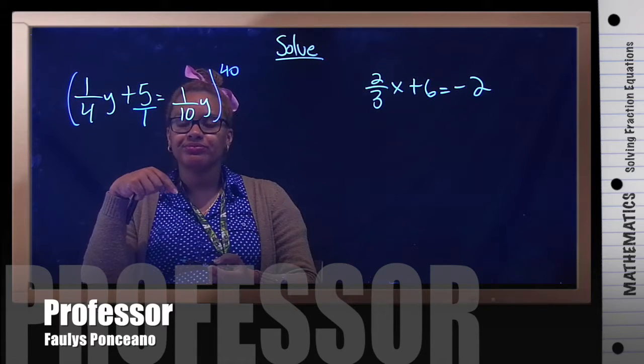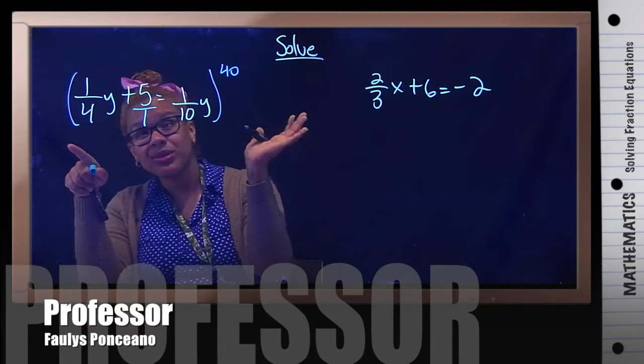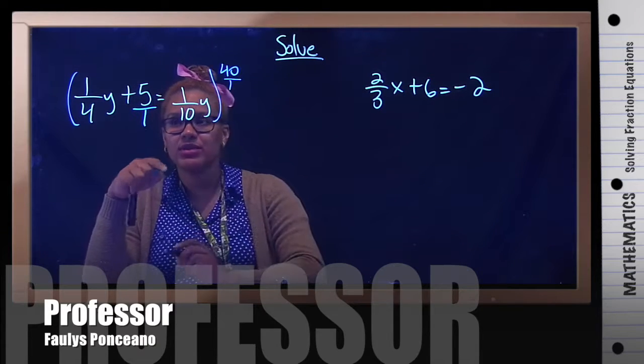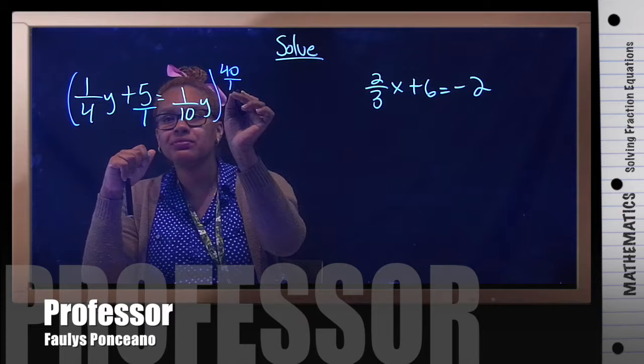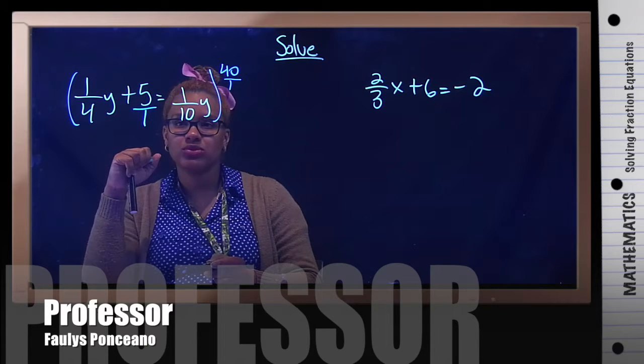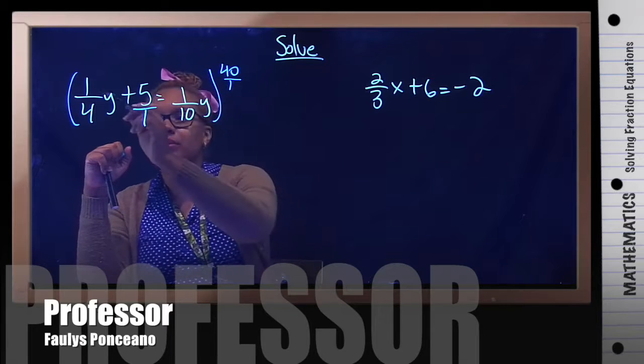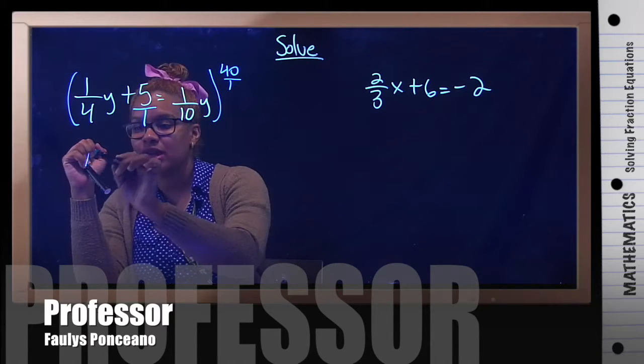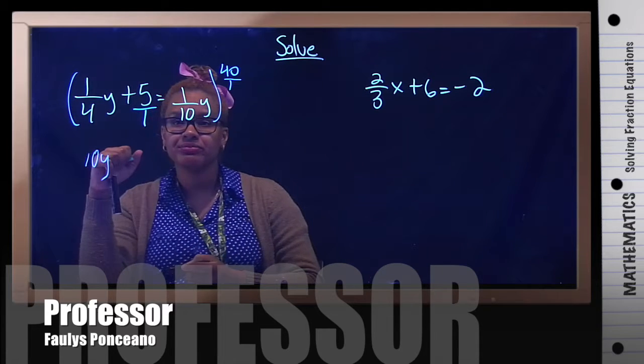Then you have 40, right? I'm multiplying 40 times everything. I'm going to put a little one there so you can see what we're doing. We're going to do 40 times 1 divided by 4. 40 times 1 is 40 divided by 4 gives you 10y.